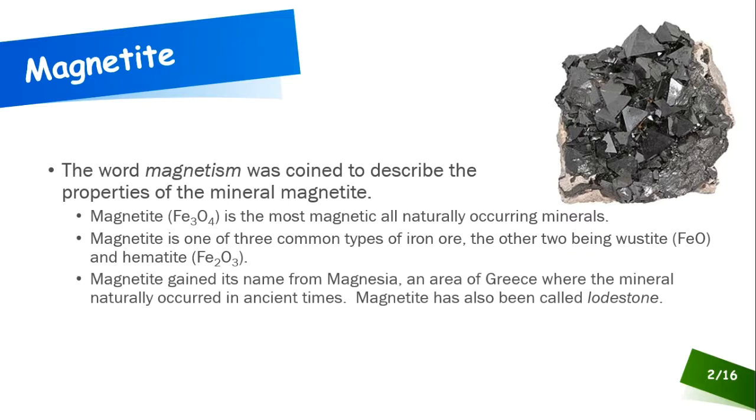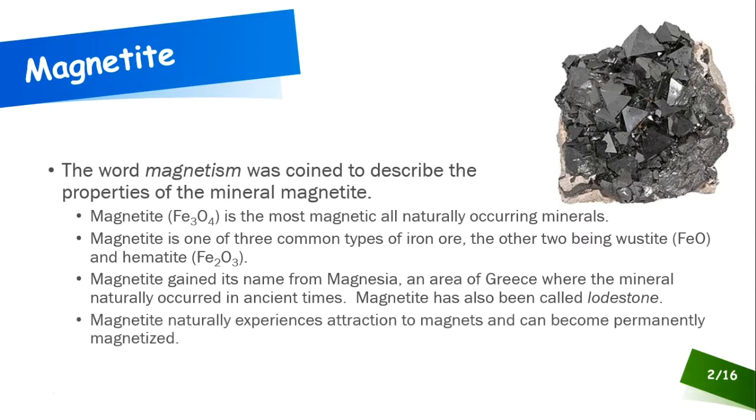Magnetite gained its name from Magnesia. This is the area of Greece where the mineral naturally occurred in ancient times. This is where many of its properties were first observed. Magnetite has also been called lodestone, so if in some of the older literature you run across this word lodestone, you know you're talking about magnetite. Magnetite naturally experiences attraction to magnets, and it can also become permanently magnetized.